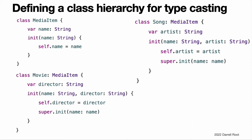The first snippet defines a new base class called MediaItem. This class provides basic functionality for any kind of item that appears in a digital media library. Specifically, it declares a name property of type string and an init name initializer. It is assumed that all media items, including all movies and songs, will have a name.